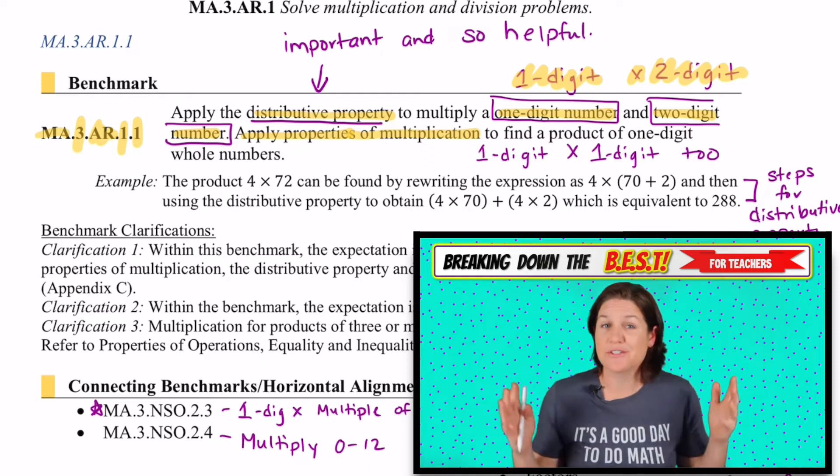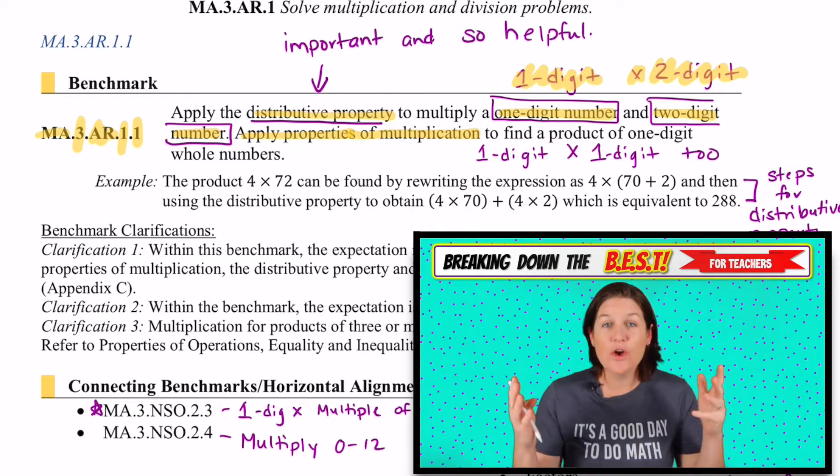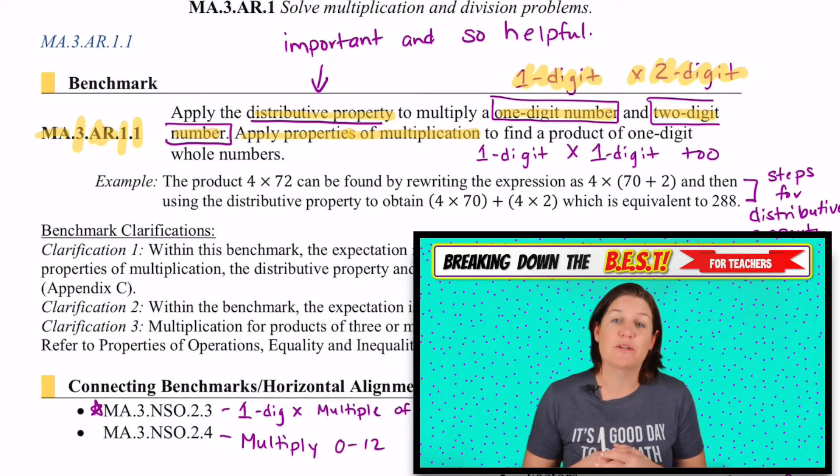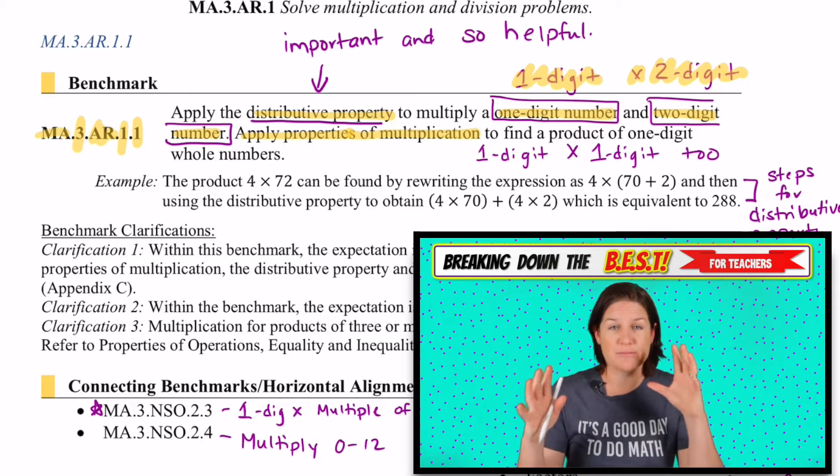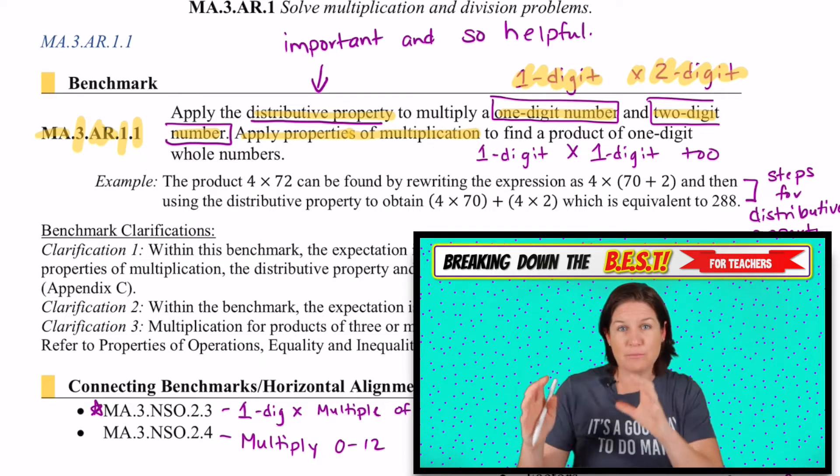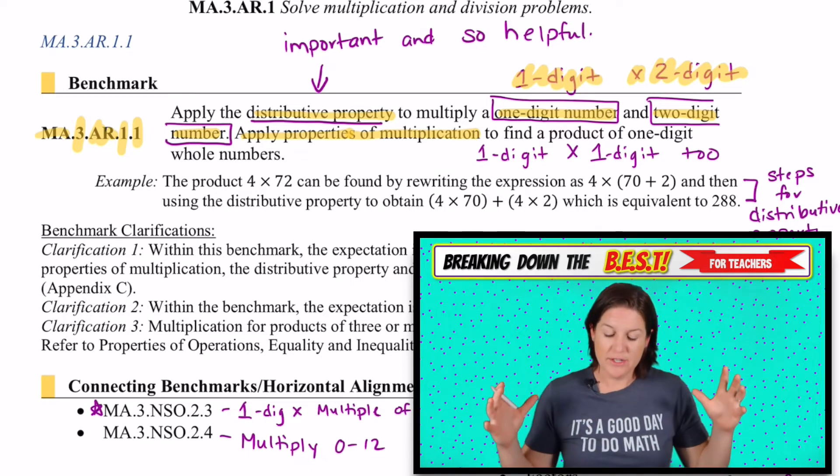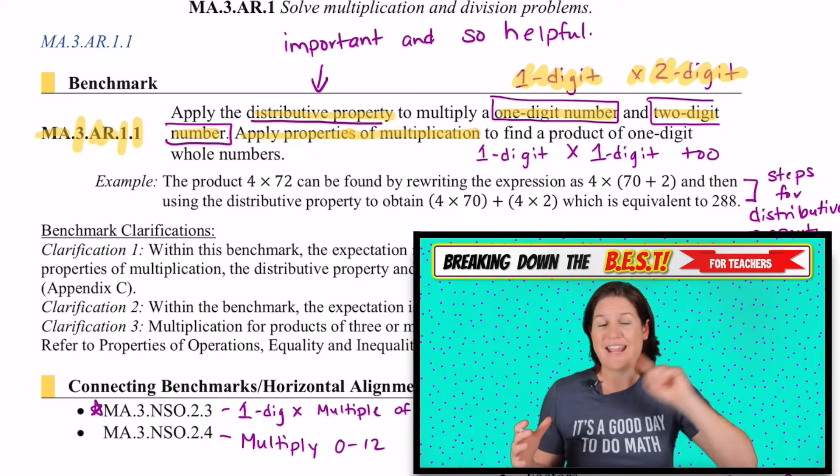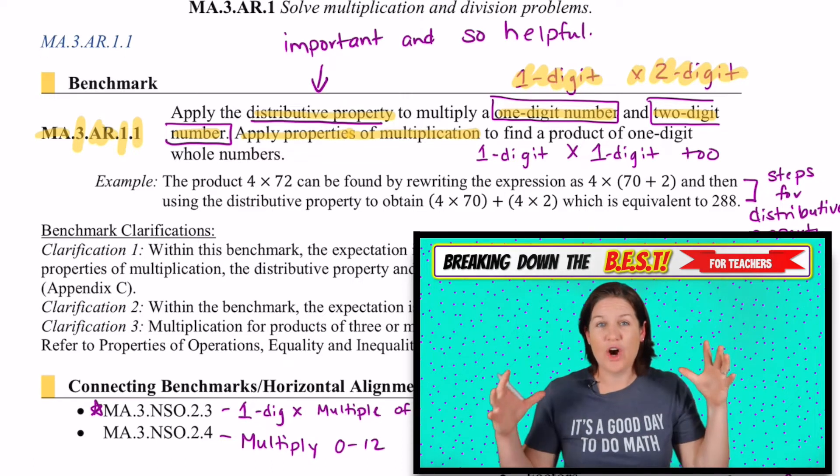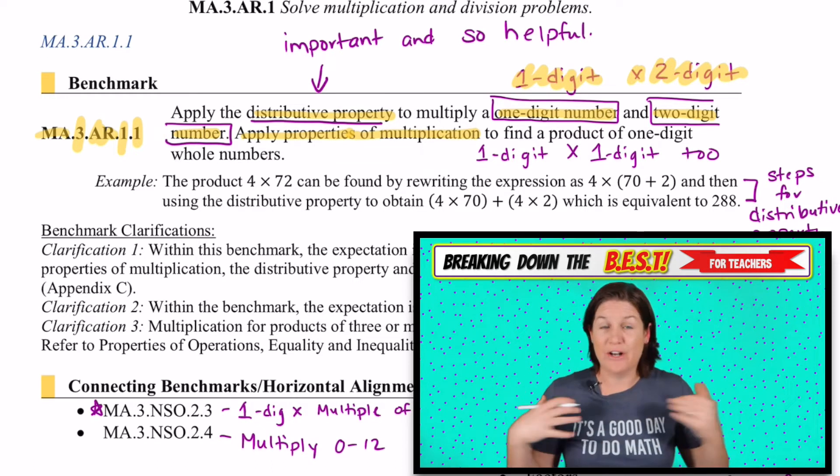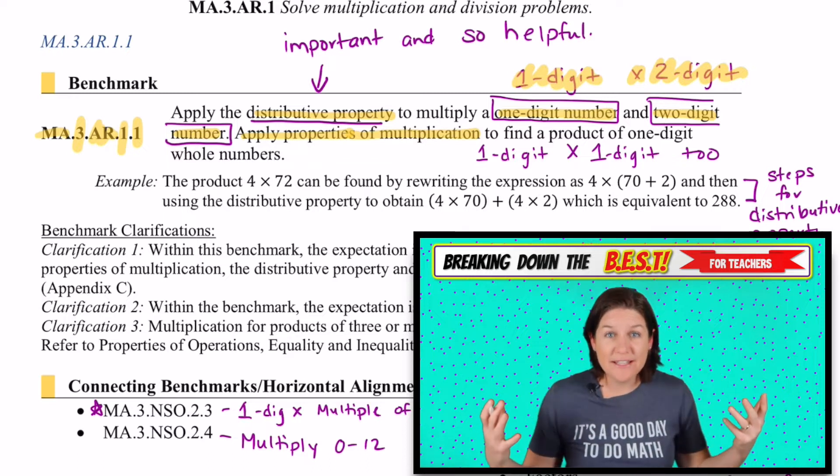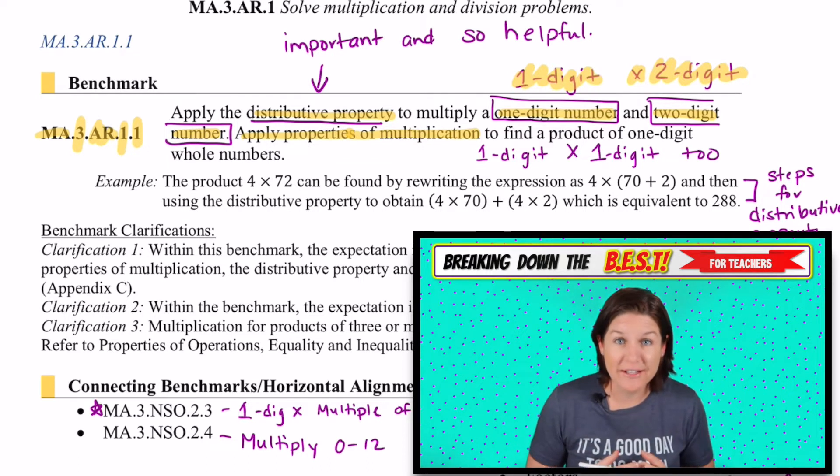We will also apply properties of multiplication, meaning the commutative property of multiplication, where we flip-flop the factors around. We can change the order of the factors and it doesn't change the product. Or the associative property, which is our grouping property. It doesn't matter which order that we group and multiply our factors, we will still arrive at the same product. So those two properties, the associative property and the commutative property, are embedded in this standard. And our job as teachers is to highlight them whenever we can.